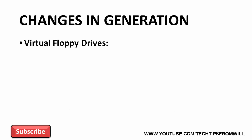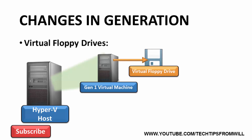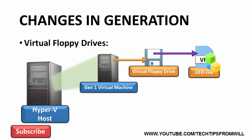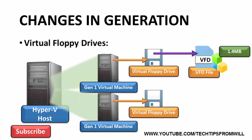The next change is a small one: virtual floppy drives. On a Generation 1 virtual machine, Microsoft provided an emulated diskette or floppy disk drive. You would create a virtual floppy disk file (VFD) and attach it to the virtual floppy drive, giving the impression that a floppy disk had been inserted. You could save up to 1.4 megabytes of data to it, allowing administrators to easily transfer data between Generation 1 virtual machines by detaching and reattaching the virtual floppy disk. Recognising that floppy disk drives are an extremely dated technology, Microsoft decided to drop support for virtual floppy drives in Generation 2 virtual machines.